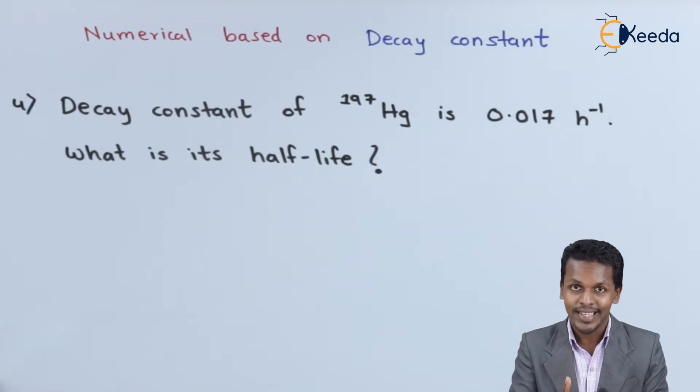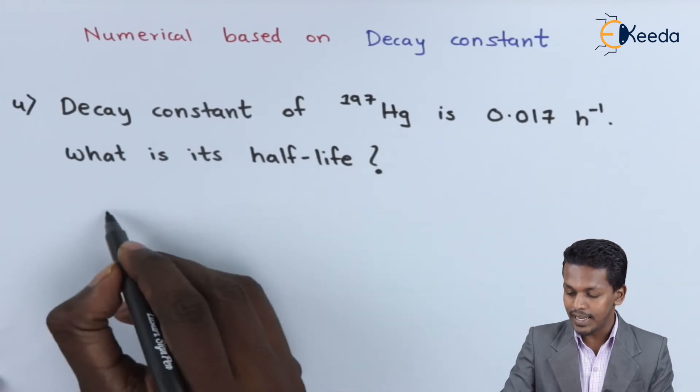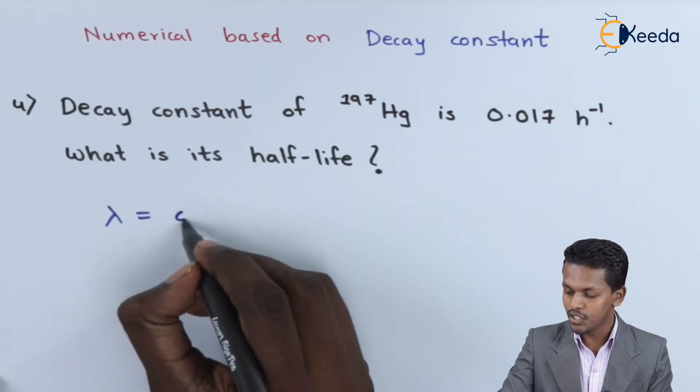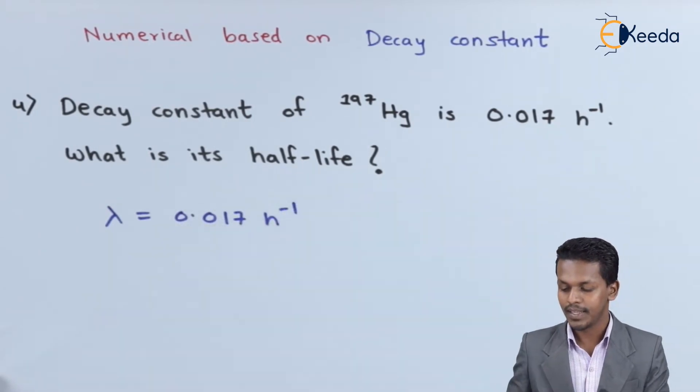Let me elaborate. First of all, the decay constant lambda is found to be 0.017 h^-1, and we have to calculate the half-life.